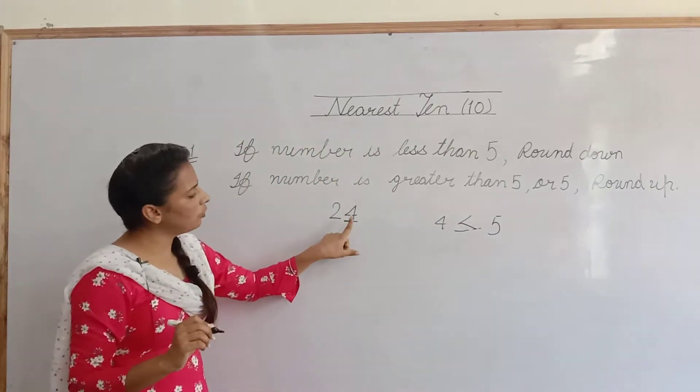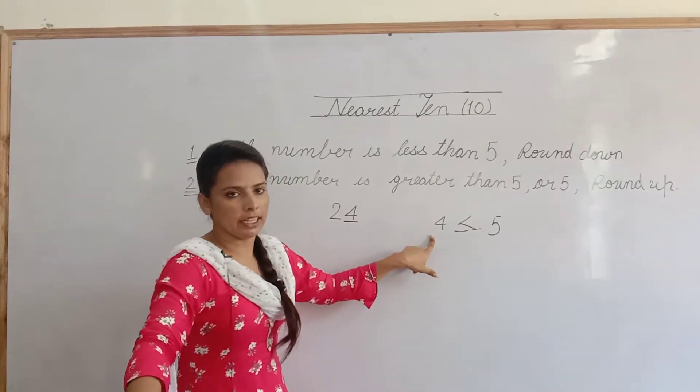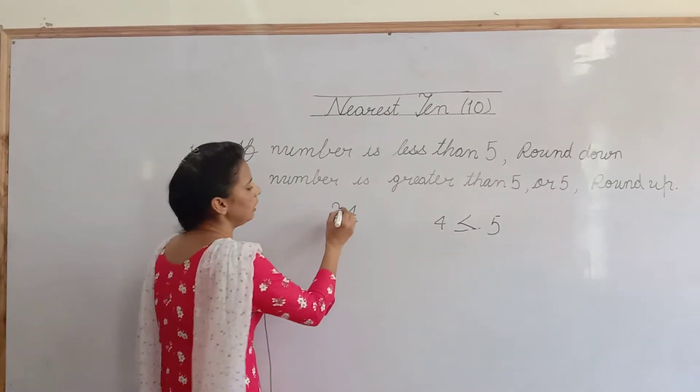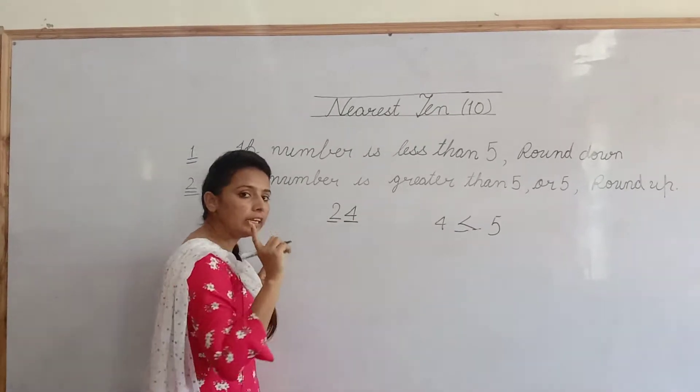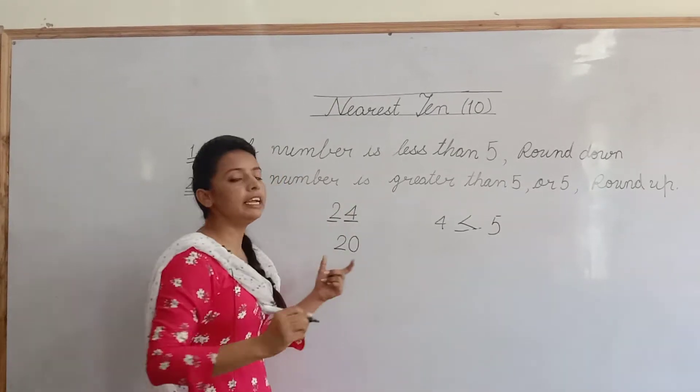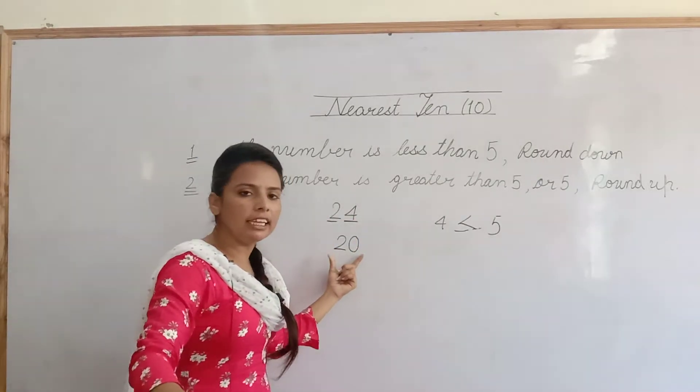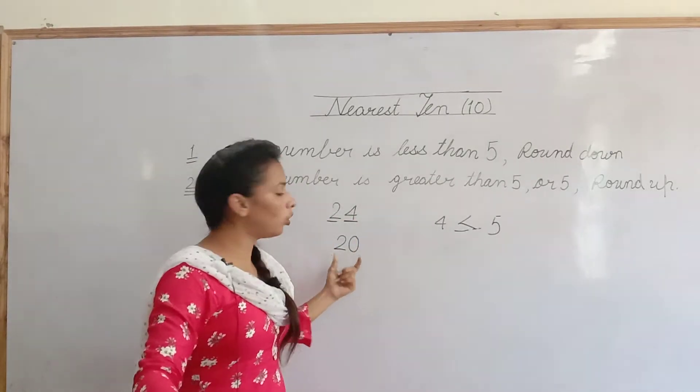So, ہمیں کیا کرنا ہے? اگر one's place پہ جو digit ہے, وہ 5 سے چھوٹی ہے. So, جو 10th place والی digit ہے, اس کو ہم change نہیں کریں گے. اس کو as it is write کر کے, one's place پہ کیا write کریں گے? 0. اب 24, nearest 10 میں کس کے nearest ہے? 20 کے.